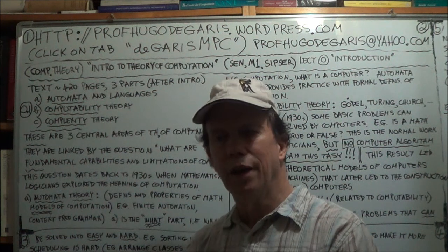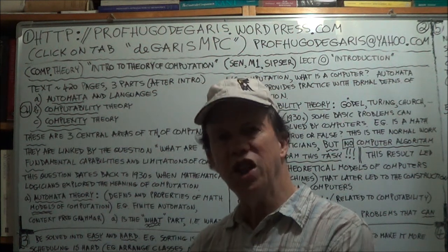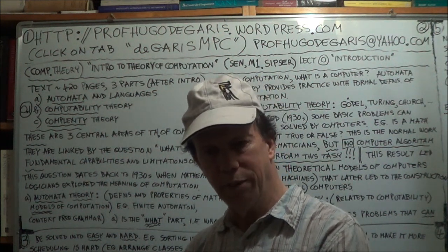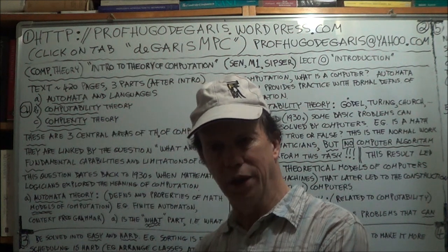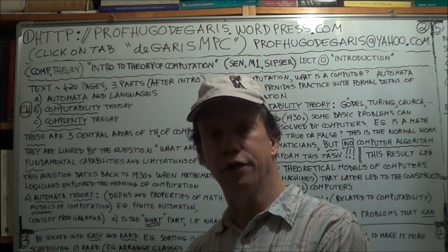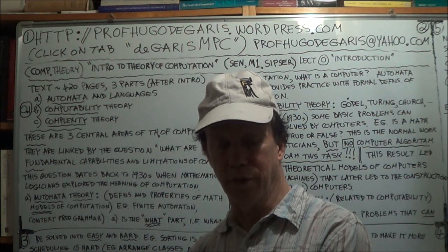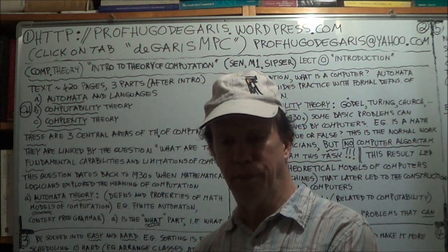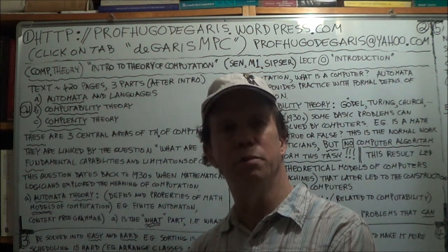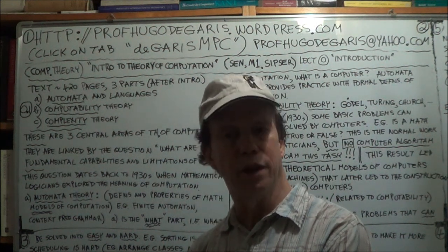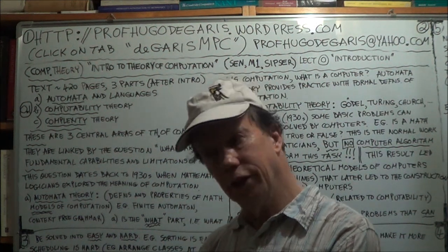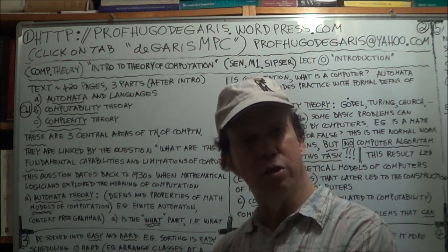That kind of thinking was very much in the air around that period, and a famous young British logician and mathematician — Turing — got very interested in this problem. So he invented a fictional machine, now called the Turing machine, and we'll definitely talk about that in this course.